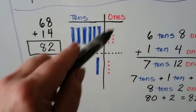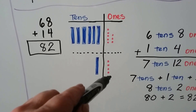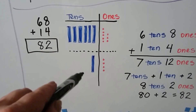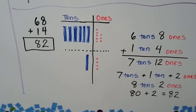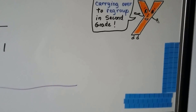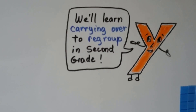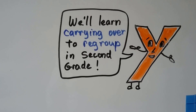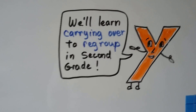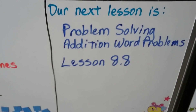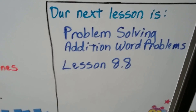We counted up all the ones, regrouped them and made a ten, and added it to the other tens. It equals 82. What we did is called carrying over or regrouping. We carry over to regroup — we're going to learn more about that in second grade. Our next lesson is Problem Solving Addition Word Problems, Lesson 8.8.